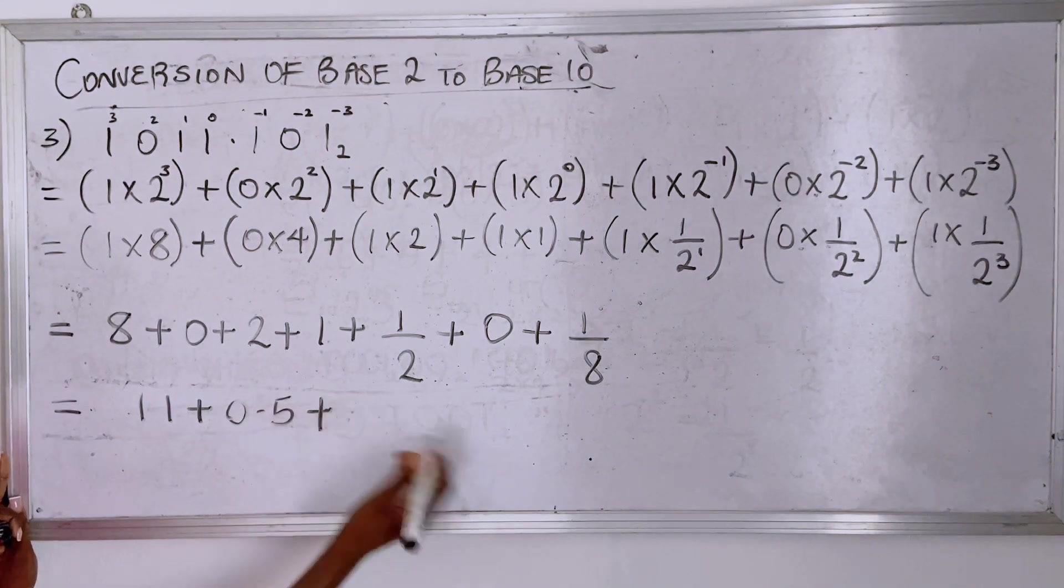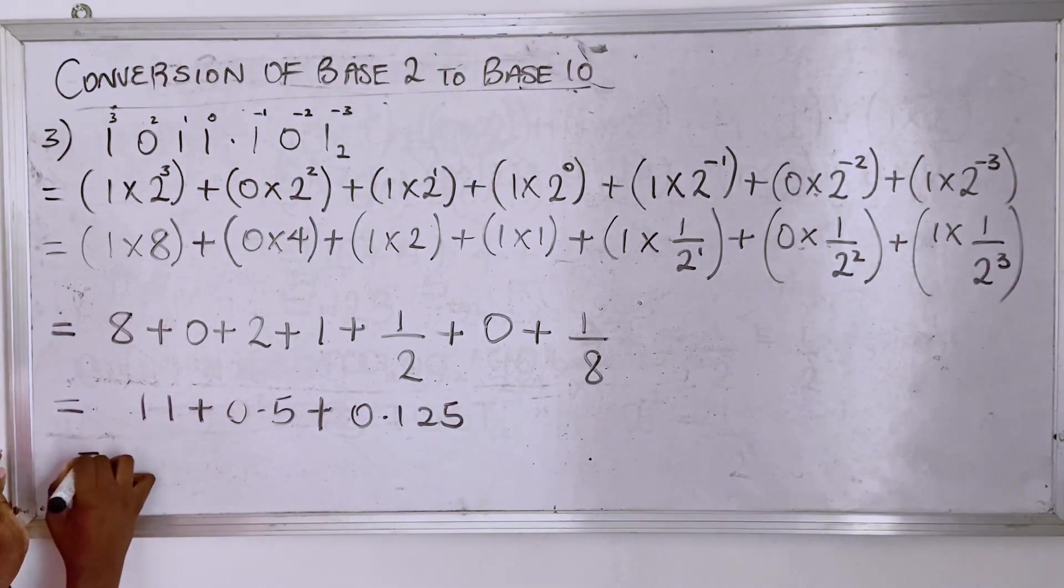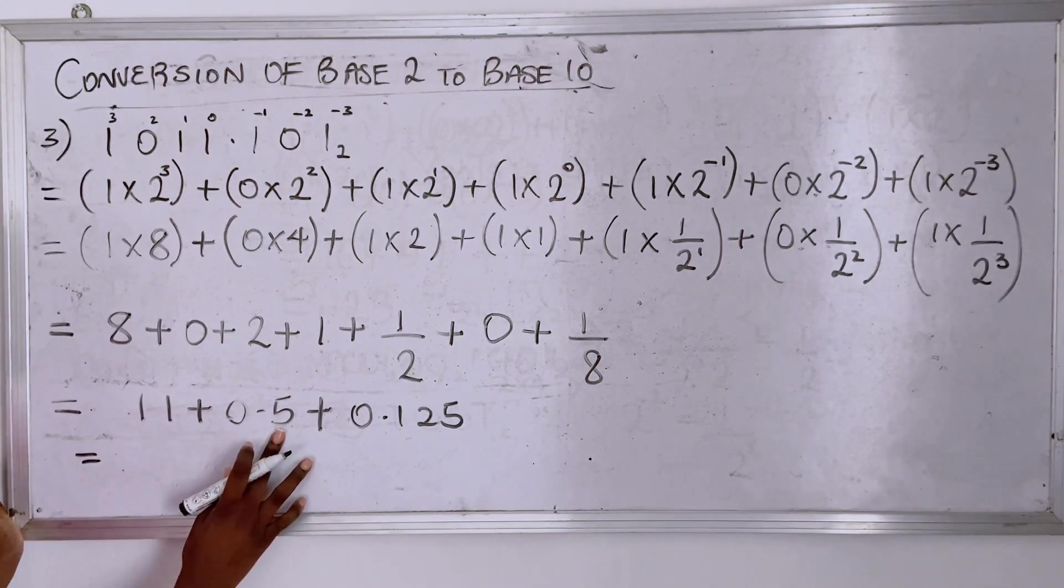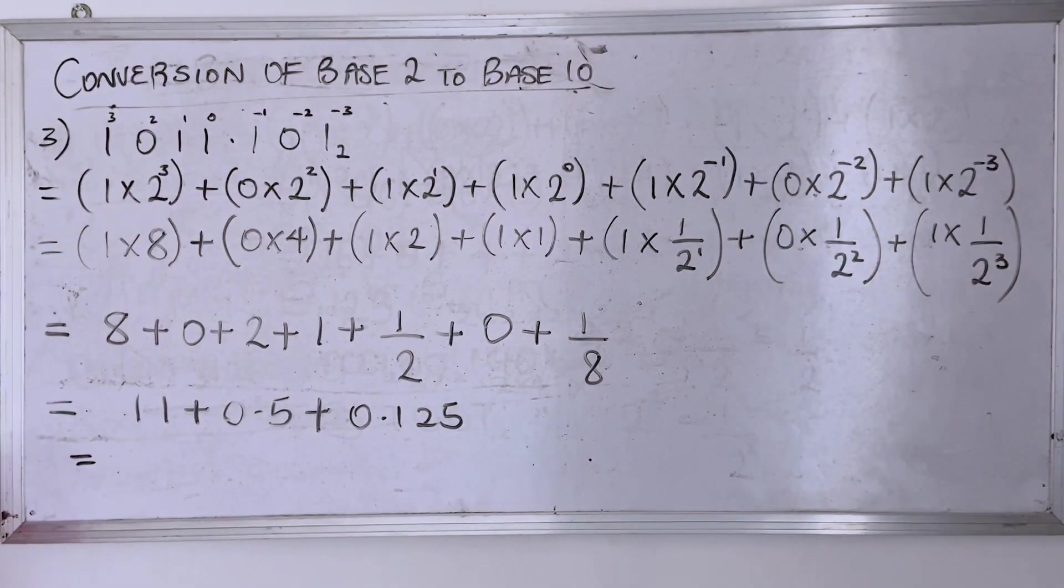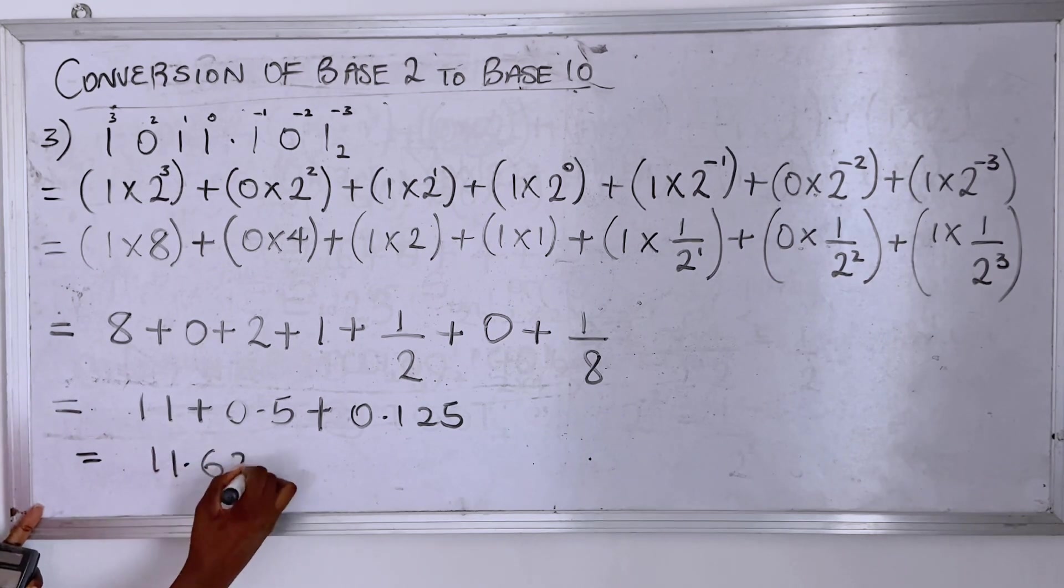One divided by eight is zero point one two five, so you could sum this up with a calculator. Eleven plus zero point five is eleven point five, plus that is eleven point six two five.